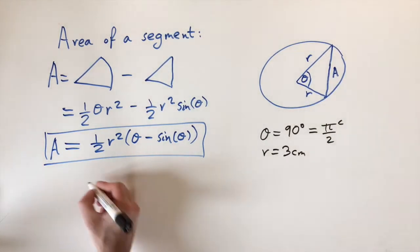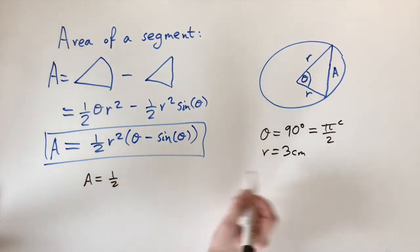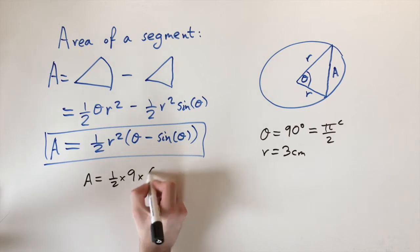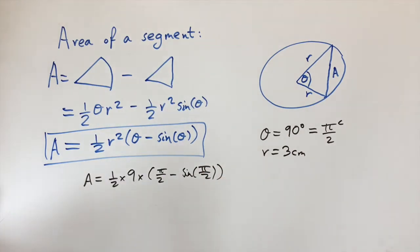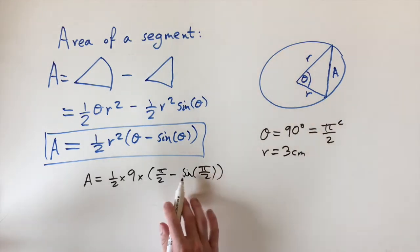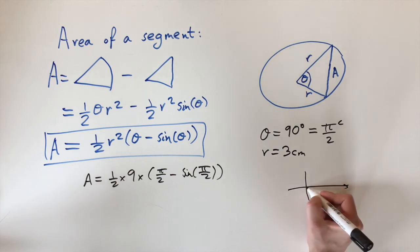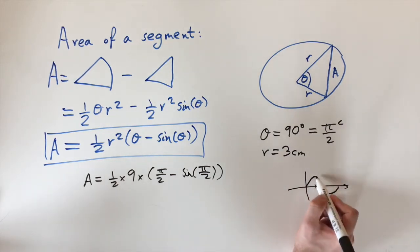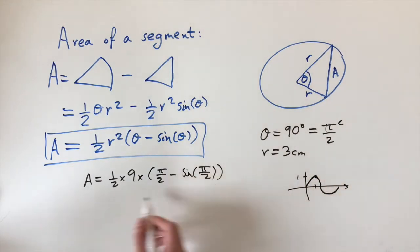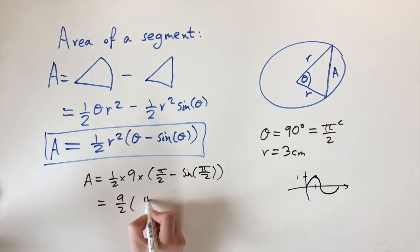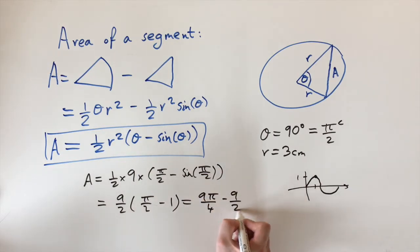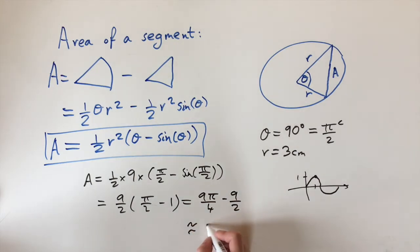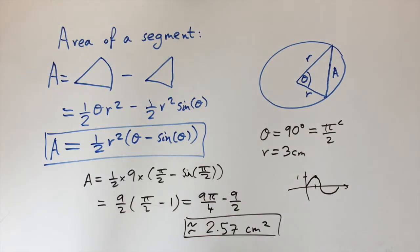Now we plug into the formula: A = (1/2) × r² × (θ − sin θ) = (1/2) × 9 × (π/2 − sin(π/2)). Since sin(π/2) = sin(90°) = 1, this simplifies to (9/2)(π/2 − 1), which expands to 9π/4 − 9/2. Putting this into a calculator gives approximately 2.57 centimeters squared. So that's the area of the segment.